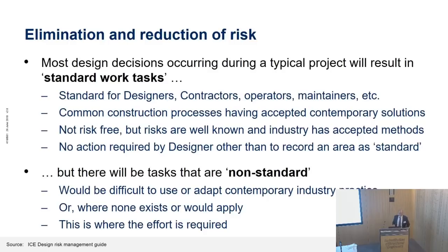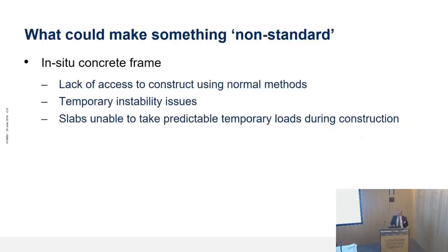The other half is that there will be non-standard elements — those that will be difficult to adopt practice for, or where none exists. That's really where the CDM effort needs to be put. What would make something non-standard? Consider the in-situ concrete frame example: a standard frame on a greenfield site, no problem. But if there's lack of access to construct it using normal methods, or temporary instability issues — for instance, cantilever slabs needing extra propping, or slabs unable to take predictable temporary loads during construction perhaps because they're relatively thin — these are the sorts of things that make it non-standard and the contractor would need to be informed.